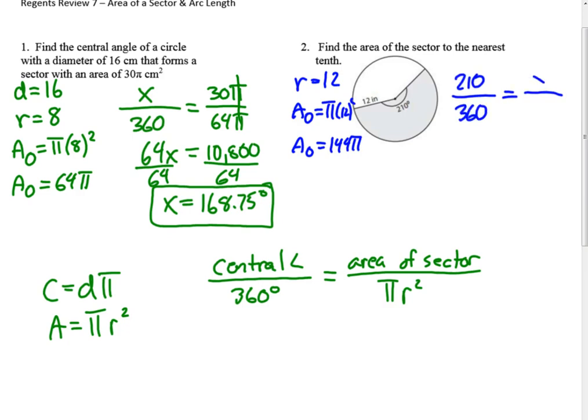...equals area of the sector, that's our unknown, over 144 pi. So we get 360x cross-product property, 210 times 144 is 30,240, and we'll just add the pi on. Sometimes they ask this in terms of pi.